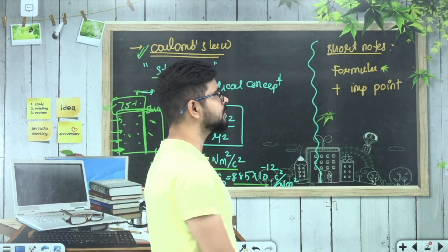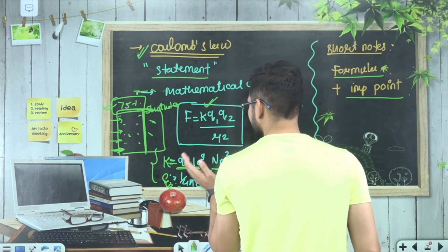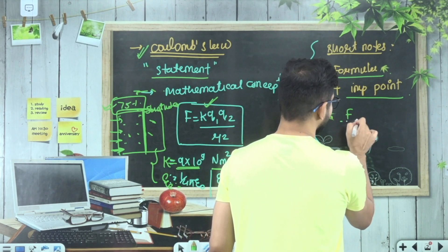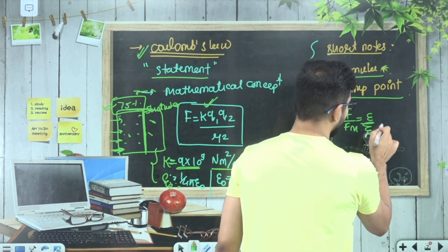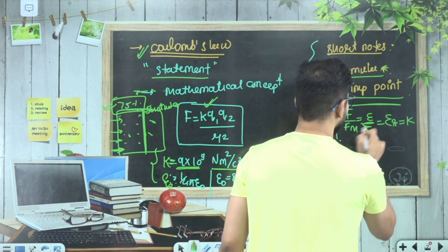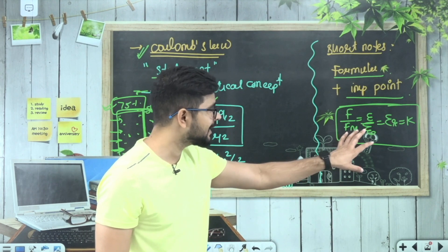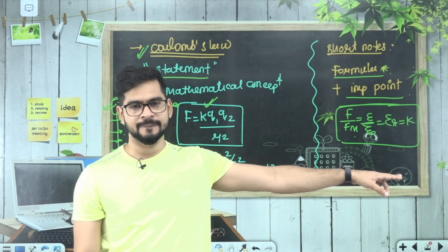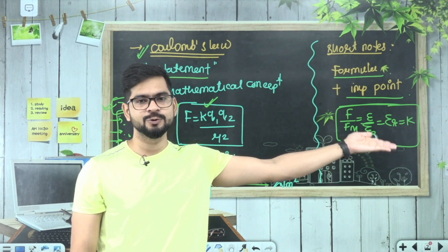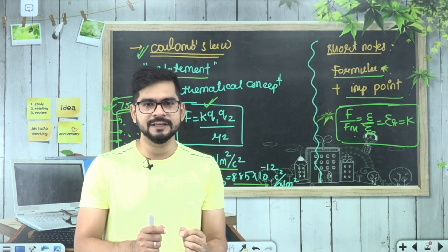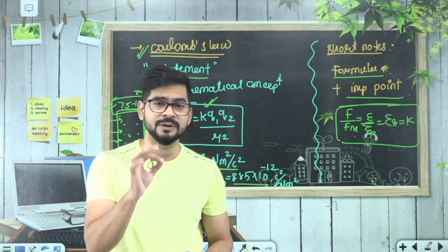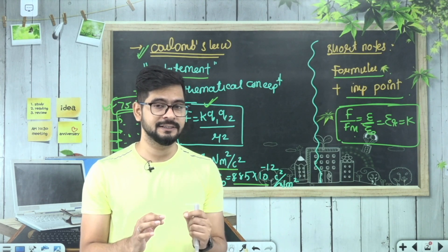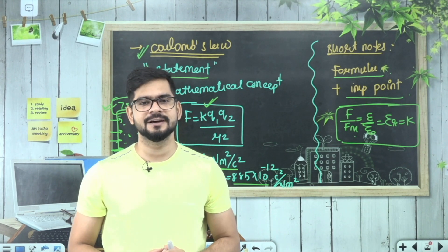Toh yahaan par 25% mein bachcha aapka formula plus important points ho jayega. Jaise agar aap hamare lecture se padh rahe ho, aapke baaba SSP se padh rahe ho, toh baar baar ye bataya jata hai - f upon fm upon epsilon upon epsilon naught is equal to capital K. Bachcha, yehi se question aata hai, main aisa aapko harbar bolta hoon. Toh bas ye wala hissa jo aap yahaan par likhte rahe, wahi cheez yahaan bhi kar do. Ab jab exam nazdik aayegi toh kyunki aap padh padh ke hi ye banaye ho, bas short notes dekhna hoga - kyunki is baar ka pattern MCQ based hai. Toh jo bachcha behtarin short notes banayega woh exam mein aag lagayega. Aur hundred percent, agar aap real SSPian ho, is baar ke exam mein aap dhamaal machao ge.